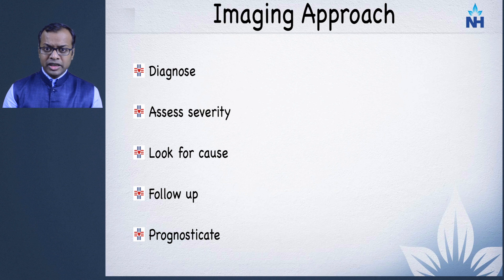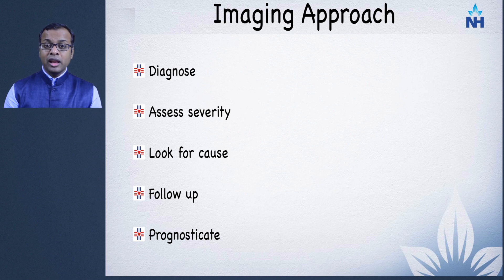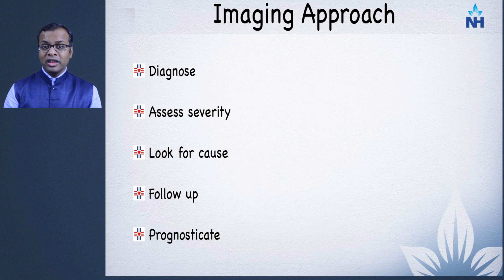The role of imaging is multifactorial in pulmonary hypertension. First, we need to diagnose the presence or absence of pulmonary hypertension. Once diagnosed, we assess severity, then look for the cause. Every imaging modality must go through all these steps. After treatment is started, imaging is used for follow-up to see disease progression.